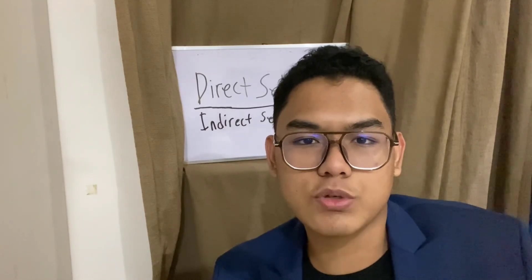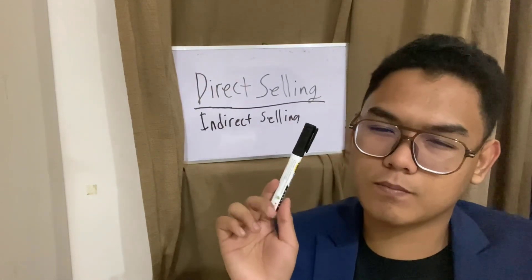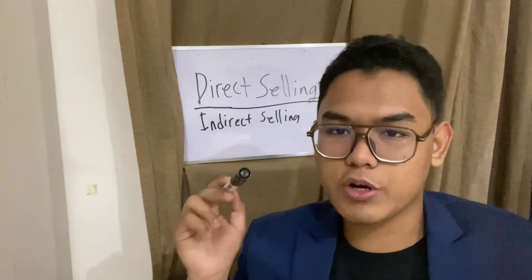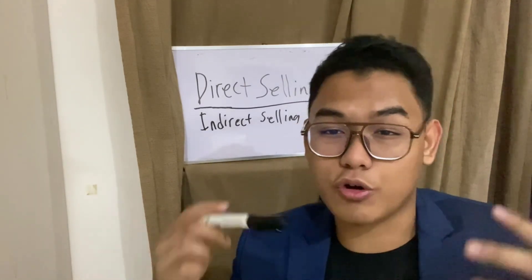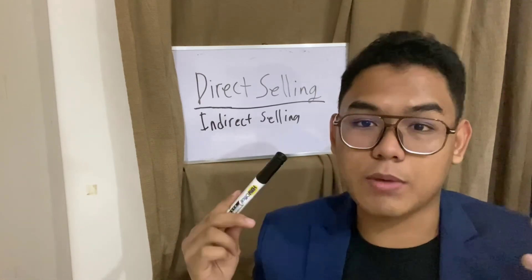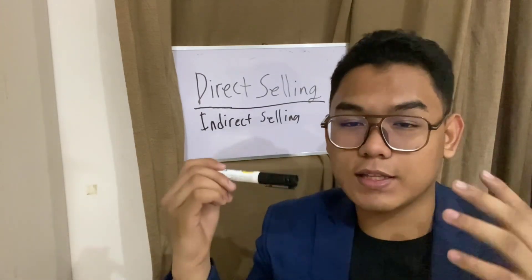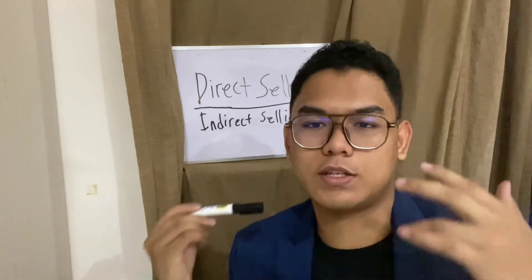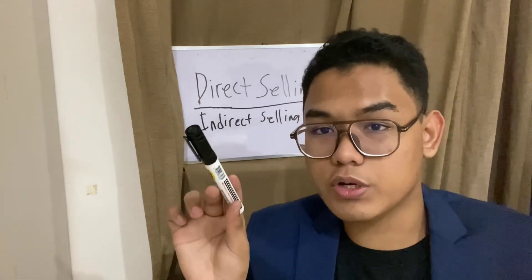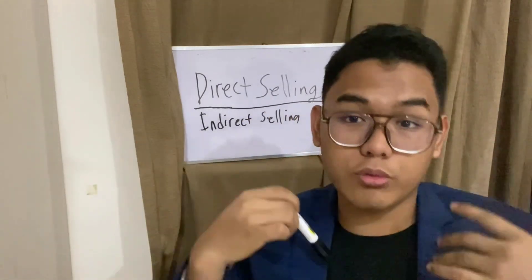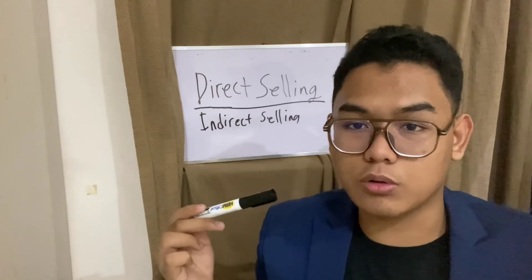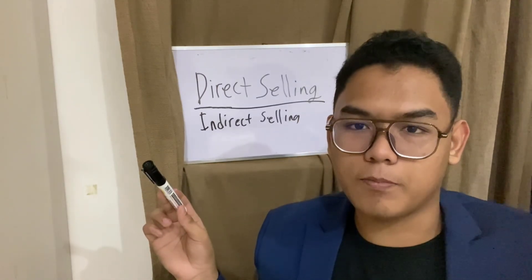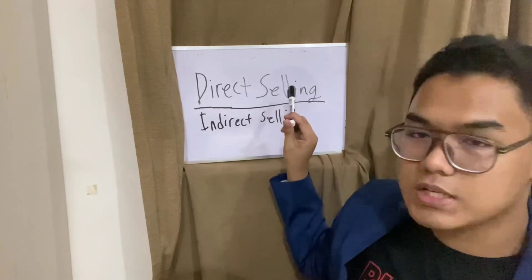Another example of indirect selling is online, like TikTok affiliate marketing. A vlogger advertises and sells your product — they buy the product from you and sell it in their own TikTok shop. They're advertising and selling your product at the same time. When a customer buys from them, the majority of the cash goes back to the original owner, but the reseller — the vlogger — also earns a commission. That is the basic concept of both direct selling and indirect selling.